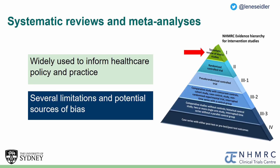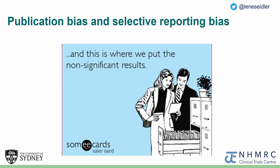I don't think I have to convince anyone attending this Cochrane Colloquium that systematic reviews and meta-analyses are amazing. They are widely used to inform practice, and they are often regarded as the top of the evidence hierarchy. And yet, there are several limitations and potential sources of bias to them. Firstly, there are publication and selective reporting bias — describing the phenomenon that positive results are more likely to be published and thus included in systematic reviews.